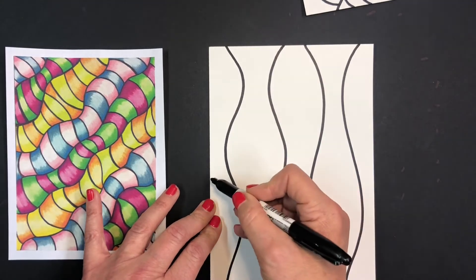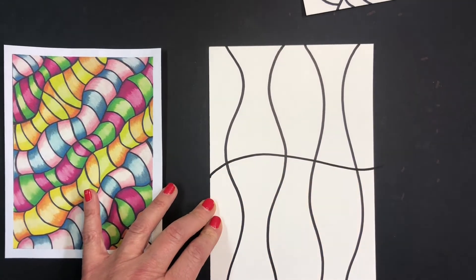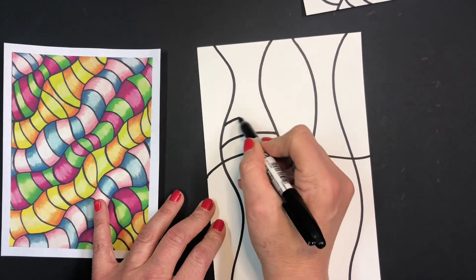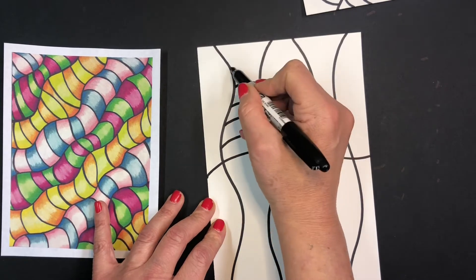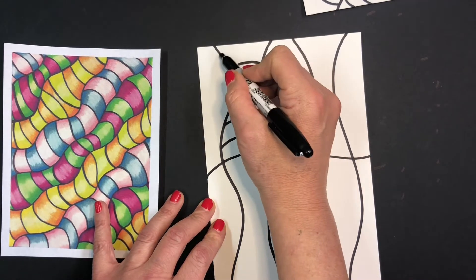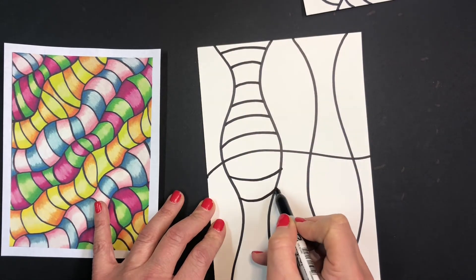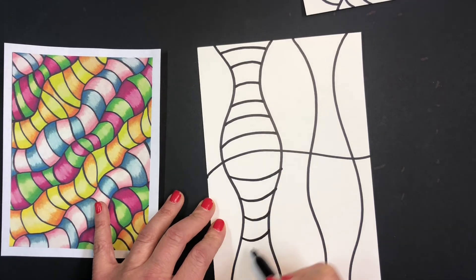Now you're going to do a curved line down the middle and it's the same idea. You're going to do curved lines going upward and curved lines going the opposite direction underneath the line.